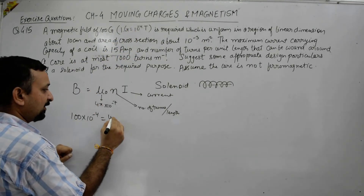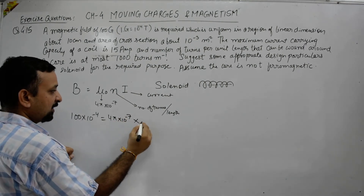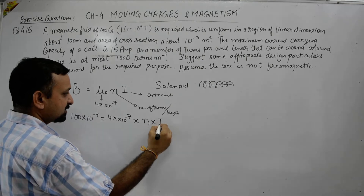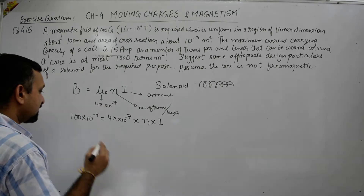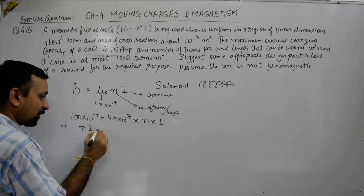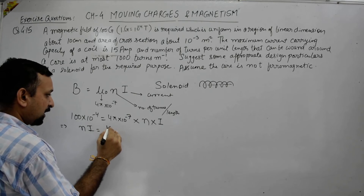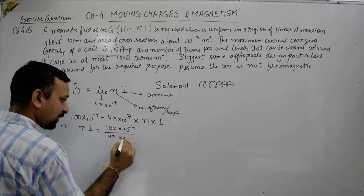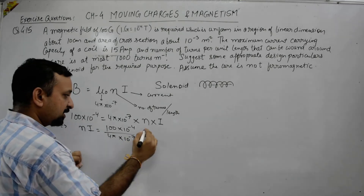Now mu zero has value 4 pi into 10 to the power minus 7. Both n, the number of turns per unit length, and i, the current, are unknown. So we calculate the product n times i. This equals 100 into 10 to the power minus 4, divided by 4 pi into 10 to the power minus 7. Solving this expression will give us the value of n times i.